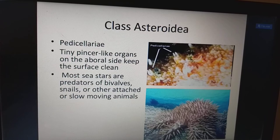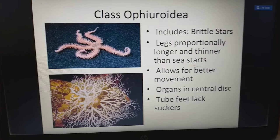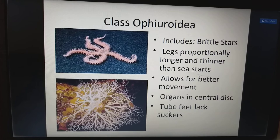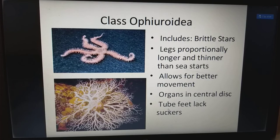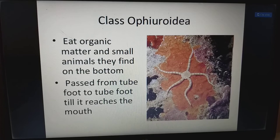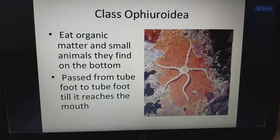Class Ophiuroidea includes brittle stars. Ophiuroidea means the limbs look like a snake, because of that they named it so. Legs are proportionally long and thinner than sea stars, allowing for better movement. Organs are in the central disc. The tube feet lack suckers for movement. They eat organic matter and small animals found on the bottom, passing food from tube foot to tube foot until it reaches the mouth.